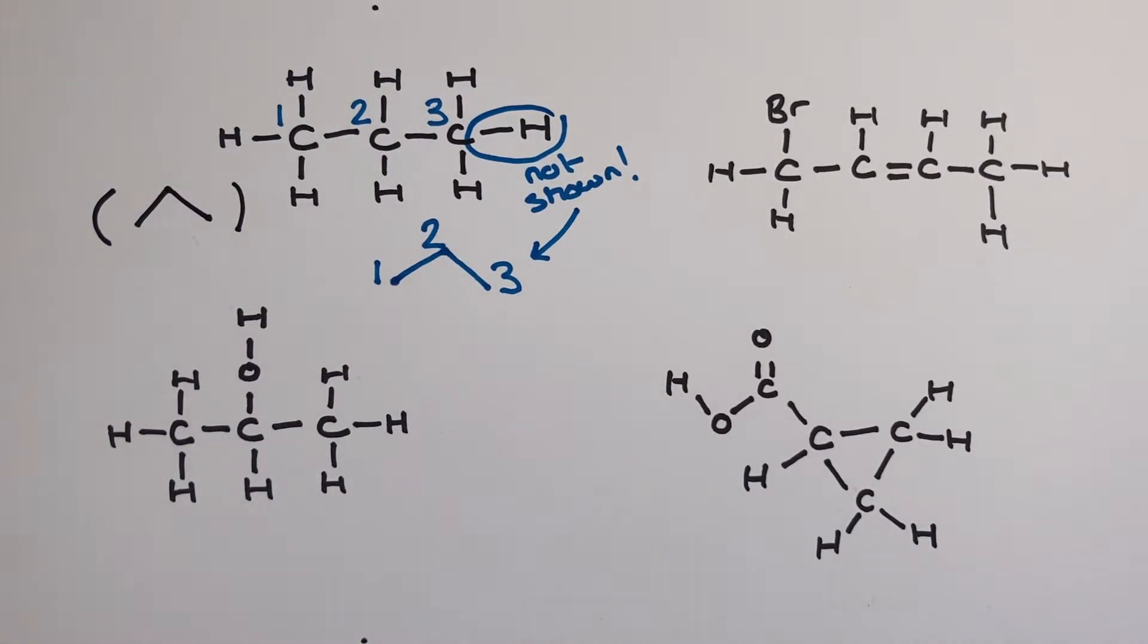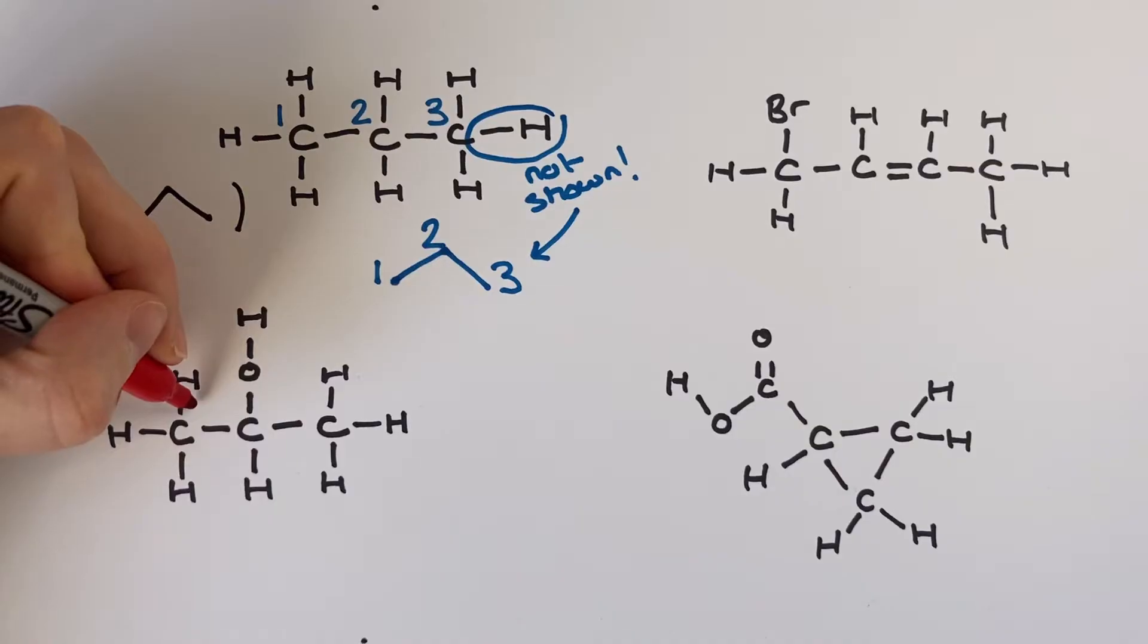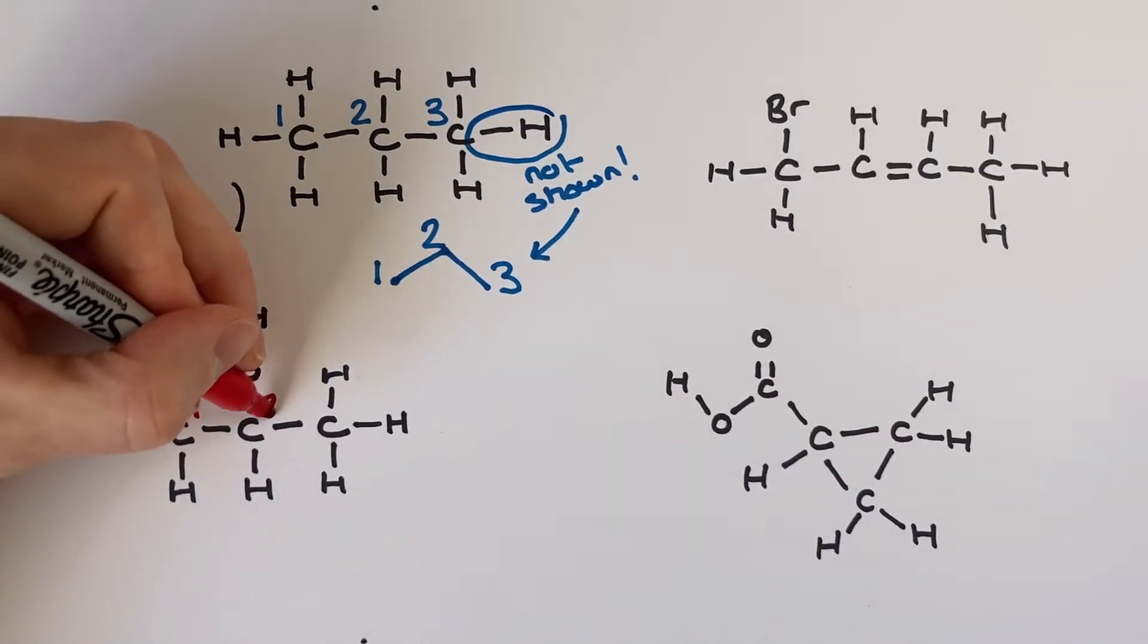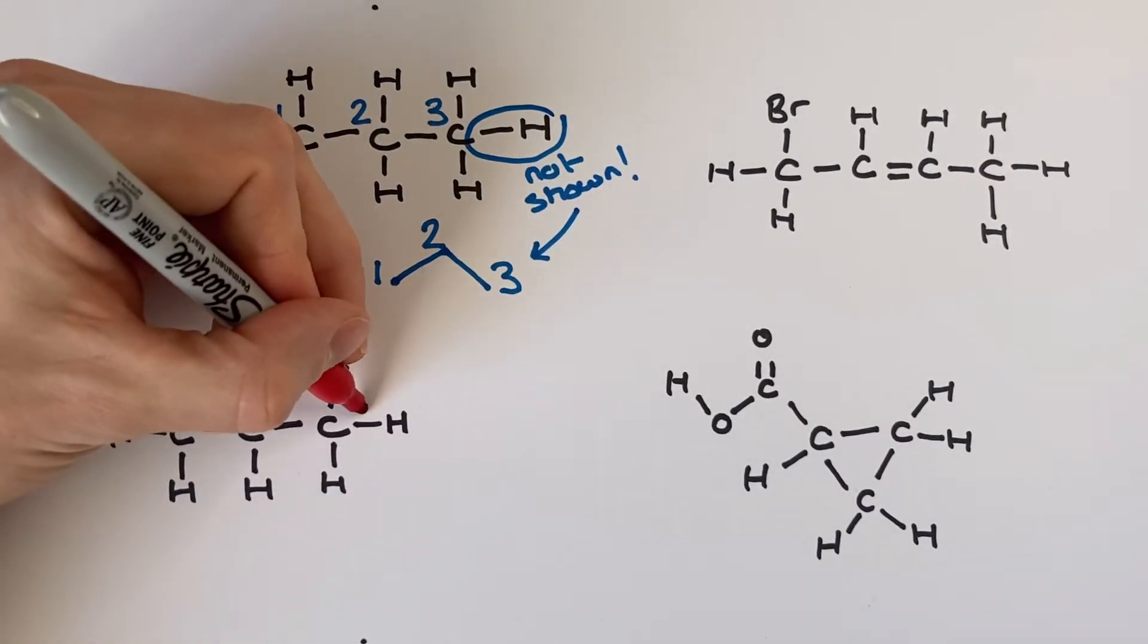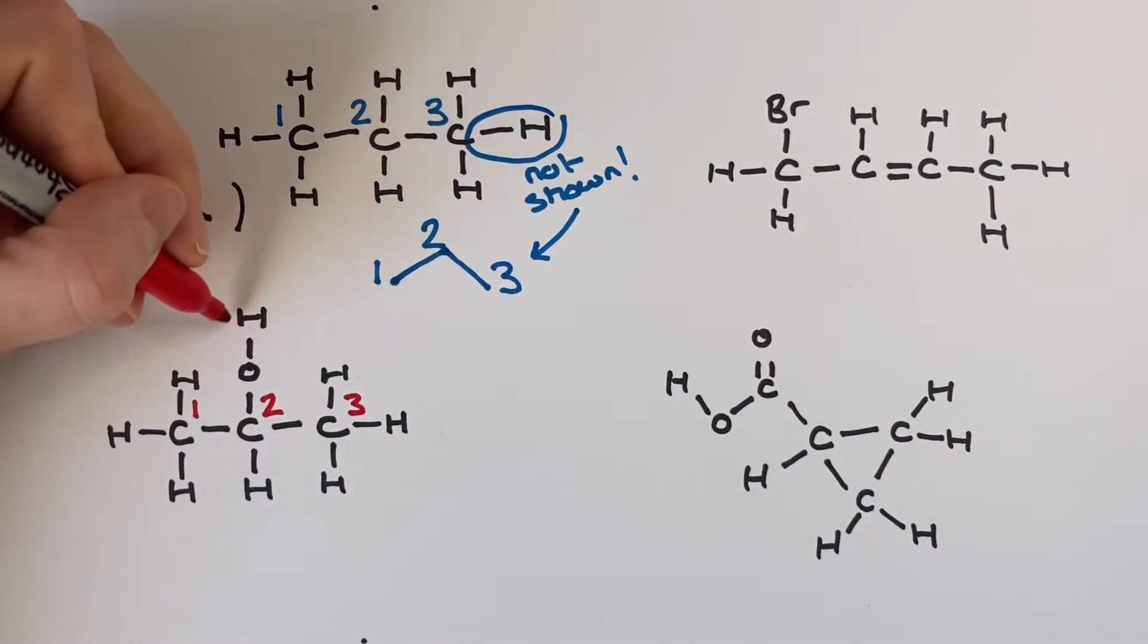So with this second example propane 2-ol I've still got a three carbon chain which I'll number out nice and clearly for you one two three but this time on carbon number two I appear to have an alcohol group which is the OH functional group.